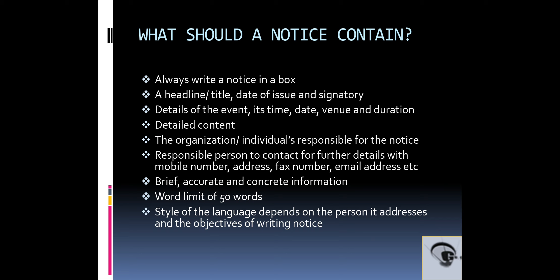What should a notice contain? Always write a notice in a box — this is very important. It should include a headline or title, date of issue and signatory, details of the event such as time, date, venue and duration, detailed content, the organization or individual responsible for the notice, and a responsible person to contact for further details with mobile number, address, fax number, and email address. Keep the information brief, accurate, and concrete. The word limit is 50 words — this is very important. The style of language depends on the person it addresses and the objectives of writing the notice.